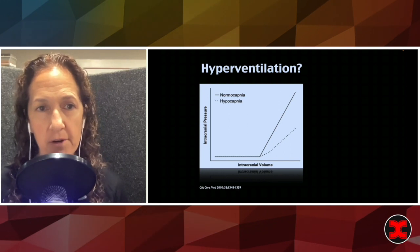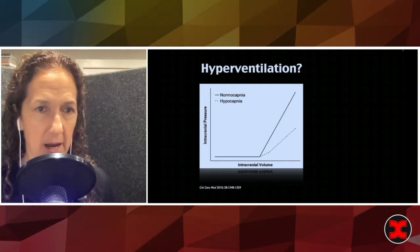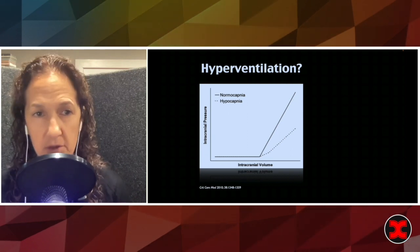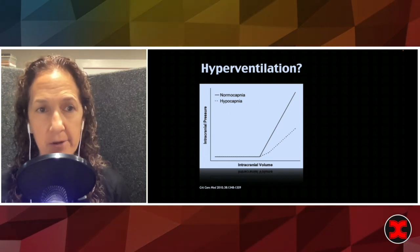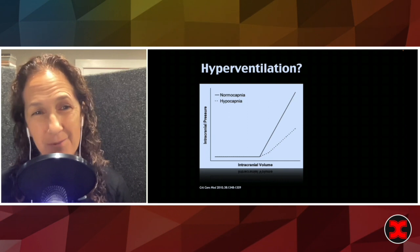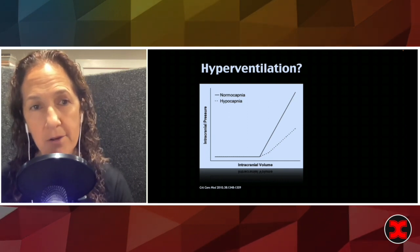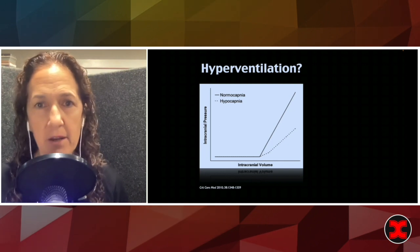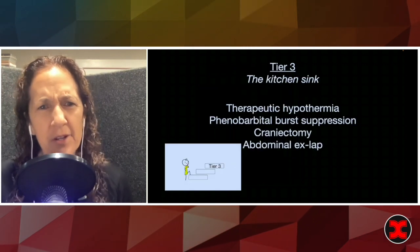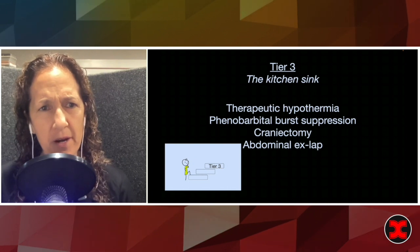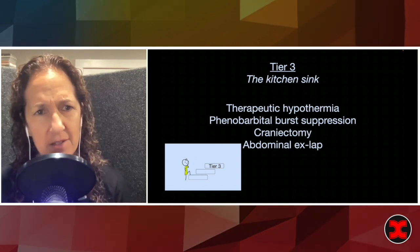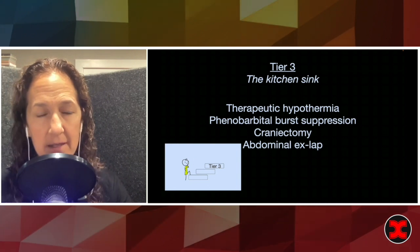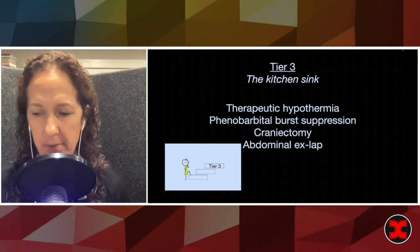Blow that CO2 down to 25 or 30 and that will buy you some more time. Hyperventilation really is when you're on your way to tier three, because if you hyperventilate for a long time, you're going to have an issue where the brain adjusts to that new pH and it vasodilates. And if you don't have a pop-off valve, that brain's going to be in trouble.